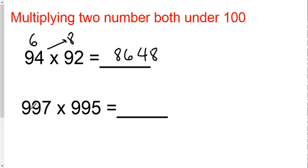Now to multiply two numbers both under a thousand, it's very similar to under a hundred. This number is under a thousand by 3, and this number is under a thousand by 5. 3 times 5 is 15.